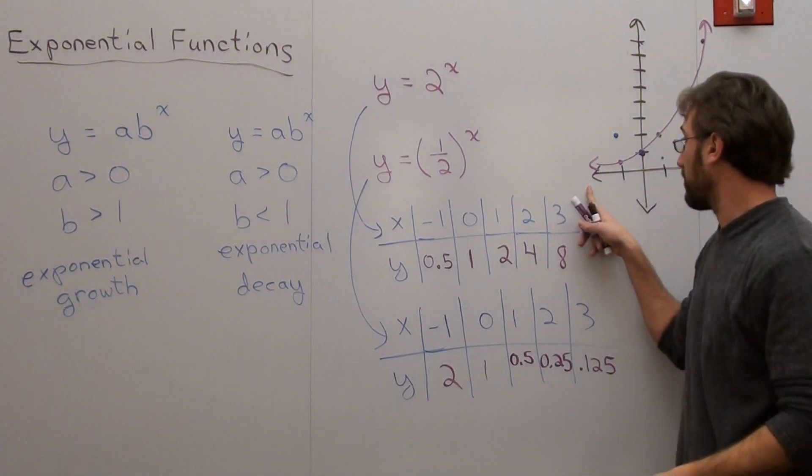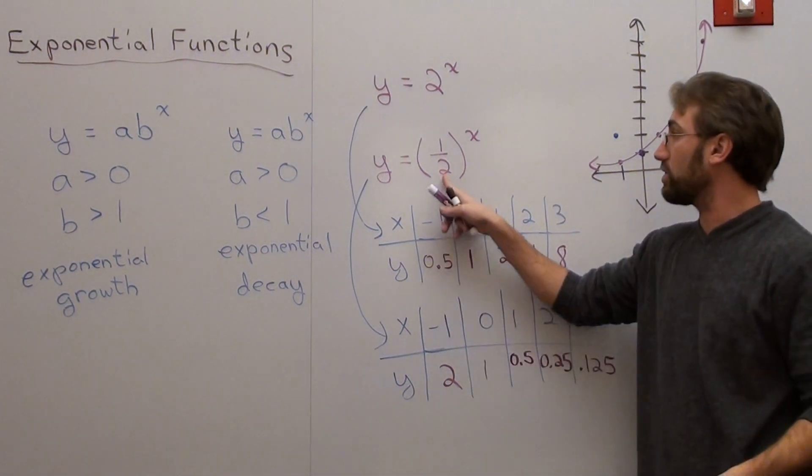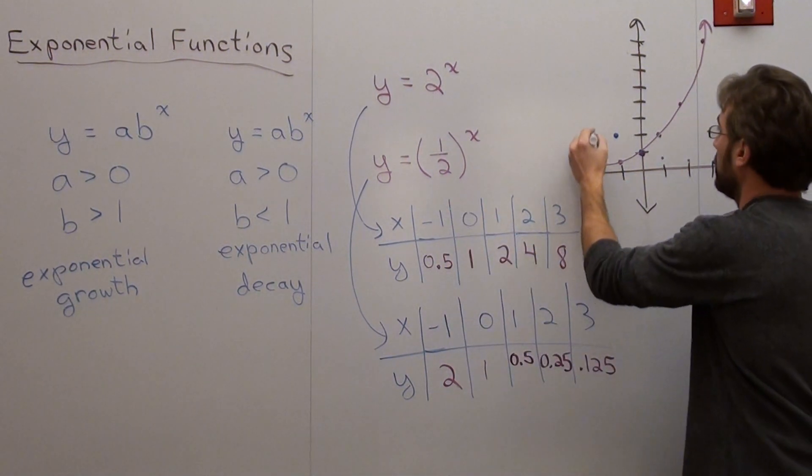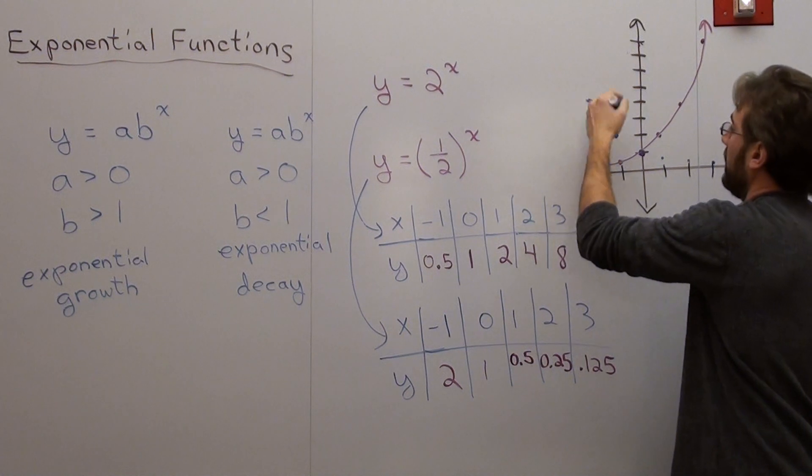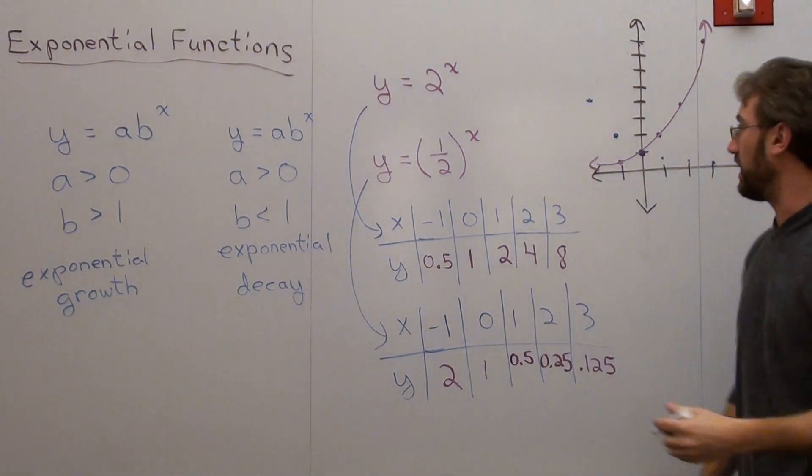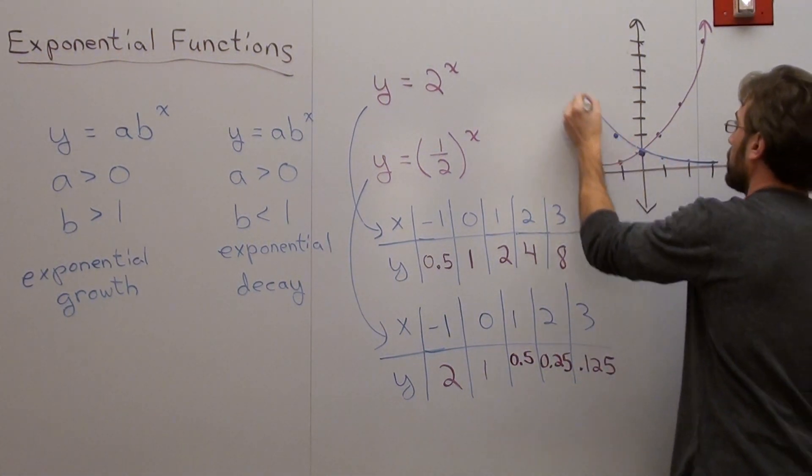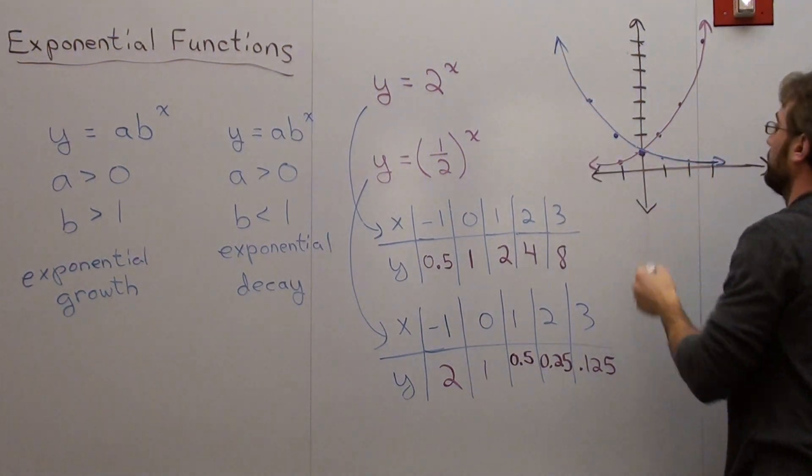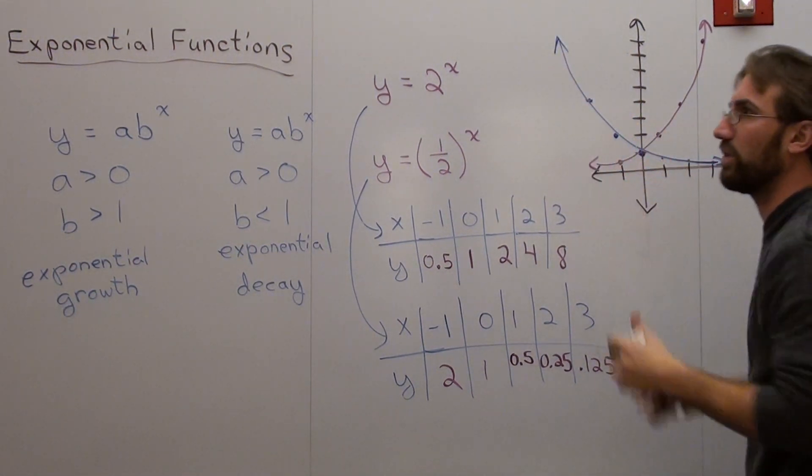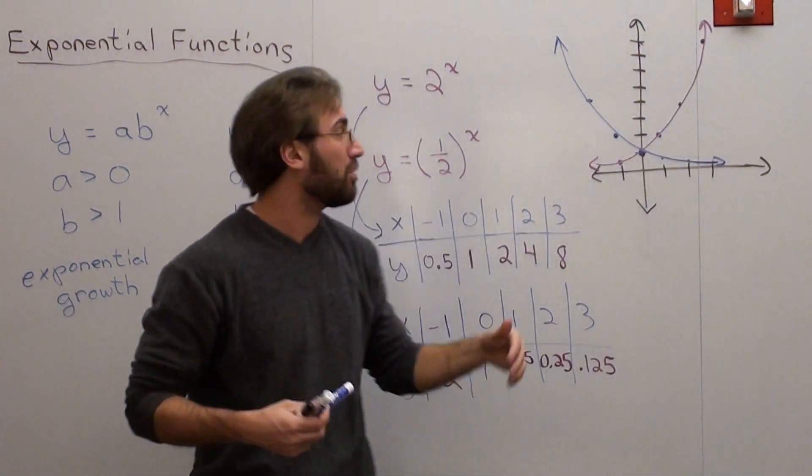Now, as I keep going here, actually the numbers will get bigger. So if I plugged in a negative 2, it would be 4. And if I plugged in a negative 3, it would be 8, and so on and so forth. So the graph looks like this, except it's mirrored off the y-axis. And that's an example of exponential decay.